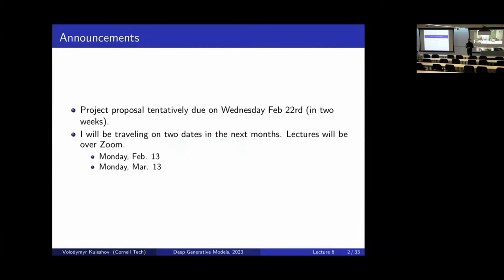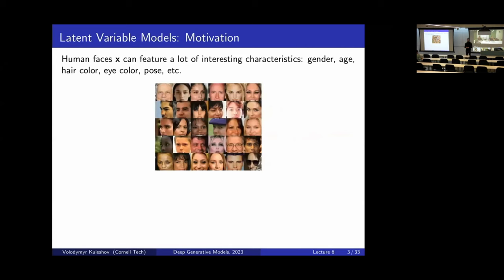Let's begin. Lecture 6. Let's dive back to latent variable models. This is a bit of a recap of what we did last time. The motivating task for this lecture and the previous lecture was that we have a data set — it could be faces, molecules, or DNA sequences — and we might want to find some interesting patterns in this data. That's a key task in generative modeling: representation learning. Generative models are not just about creating new faces, but an important task is to understand the structure of a dataset and discover interesting patterns of variation in an unsupervised way.